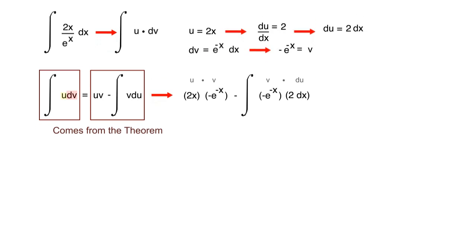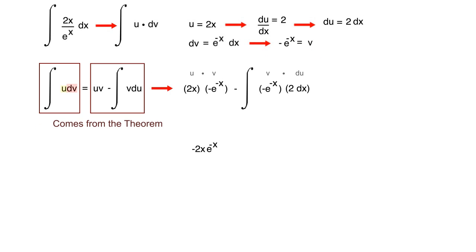Let's combine some terms, clean it up a little bit. This is going to reduce to negative 2x e to the negative x plus 2 times the integral e to the negative x dx. As you can see, I've just factored out the 2 and the negative 1 outside our integration.